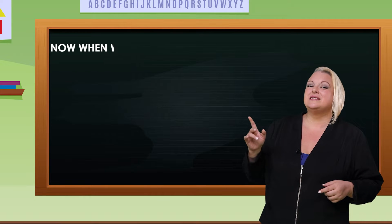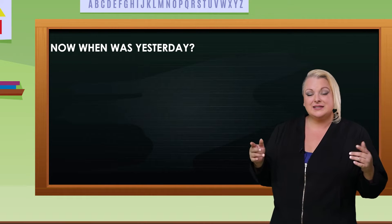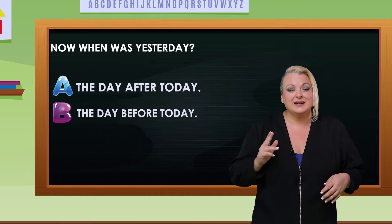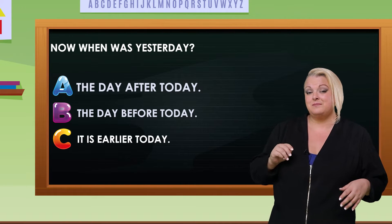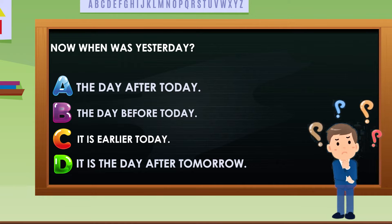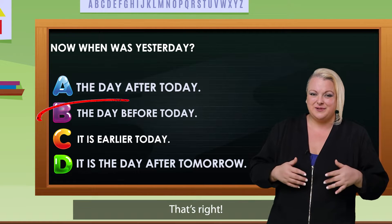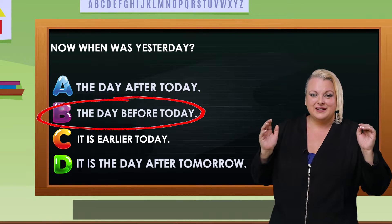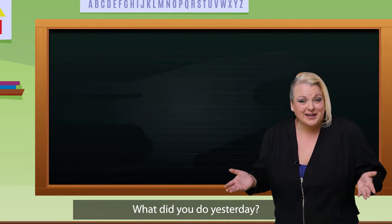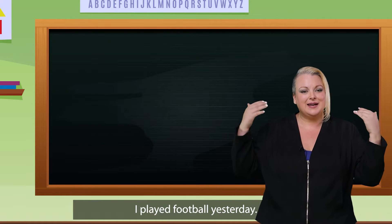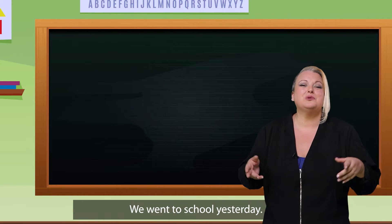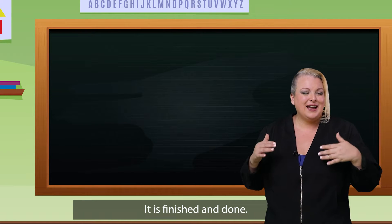Now, when was yesterday? Is it: a) the day after today, b) the day before today, c) it is earlier today, or d) it is the day after tomorrow? That's right — it's the day before today. This means it's already happened. It is in the past. What did you do yesterday? I played football yesterday. We went shopping yesterday. We went to school yesterday. It is finished and done.